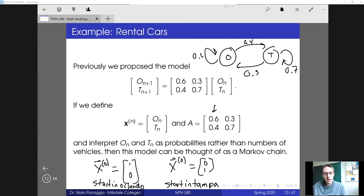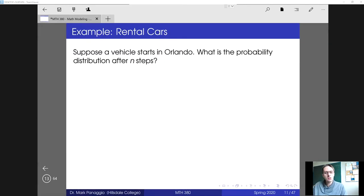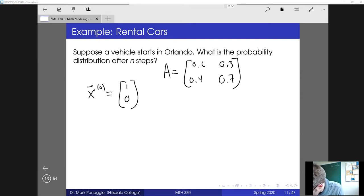And by multiplying by the matrix A, we can find the probabilities for the next state and the state after that. All right, so let's actually work this out. Suppose a vehicle starts in Orlando, what's the probability distribution after n steps? So we'll do a couple of cases actually by hand, and then we'll do the general formula after that. So let me remind you, the transition matrix was 0.6, 0.4, 0.3, and 0.7. And so if the vehicle starts in Orlando, then our initial state is just 1, 0. The probability that we're in Orlando is 1. The probability that we're in Tampa is 0.